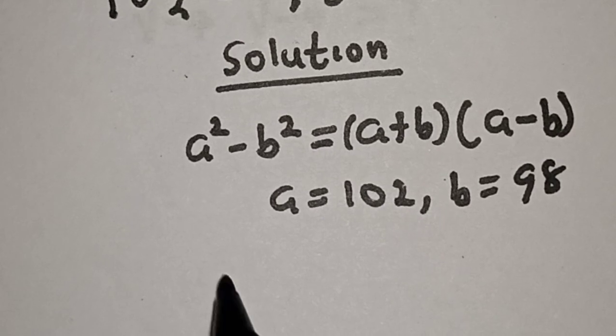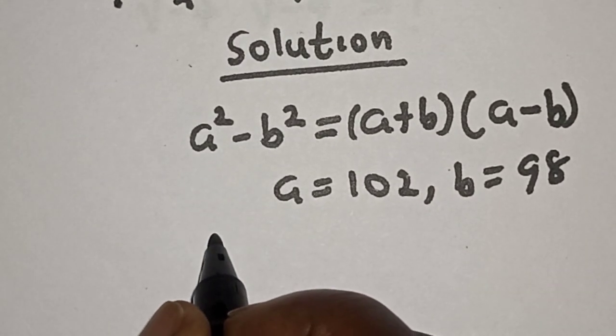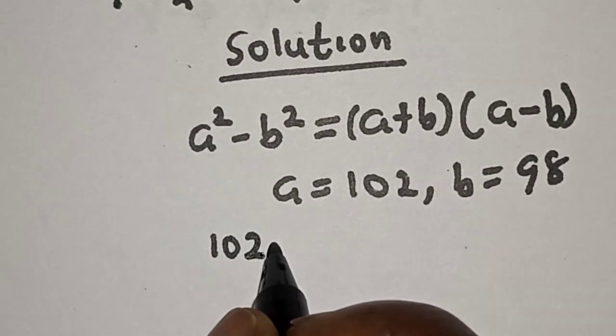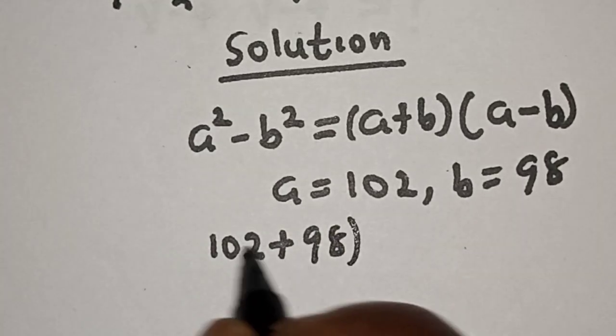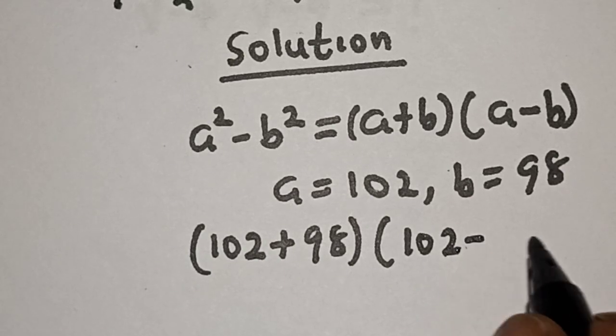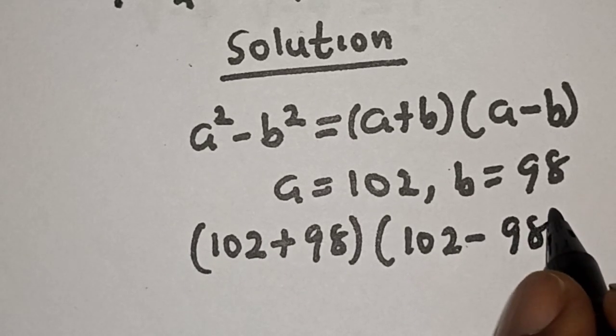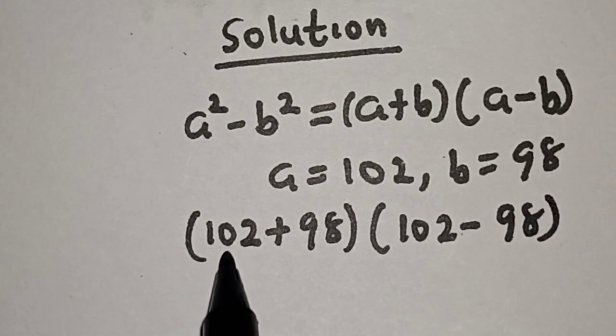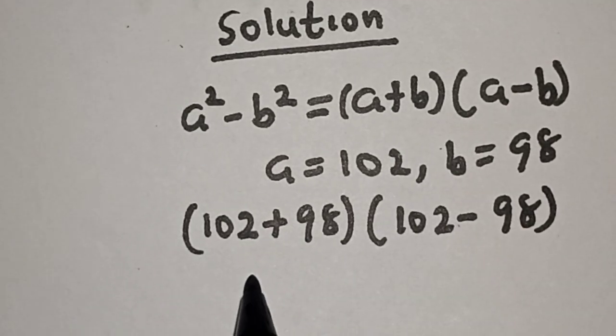So we have 102 plus 98 bracket 102 minus 98. Now if you add this plus this, this is 200 multiplied by 102 minus 98, which is 4.